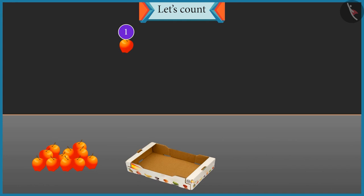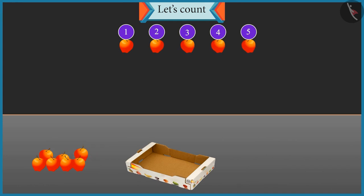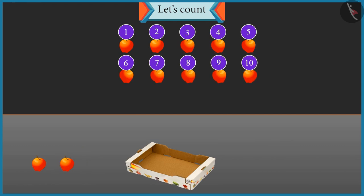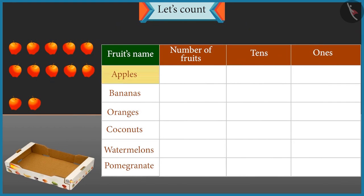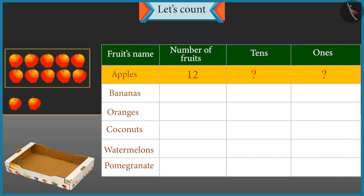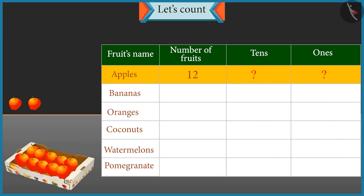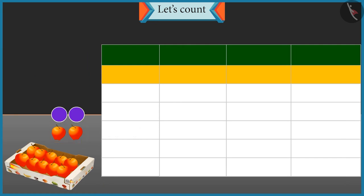One, two, three, four, five, six, seven, eight, nine, ten, eleven and twelve. There are twelve apples. Well done. Now tell me, how many tens and ones are there in twelve? One group of ten will be formed and two apples will be left. So there is one tens and two ones.